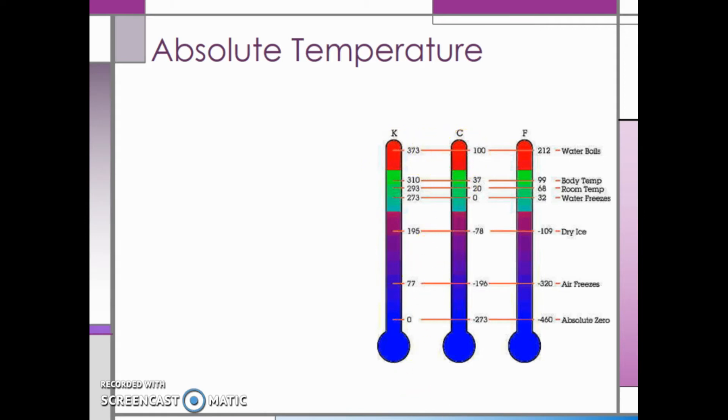In order to convert from degrees Celsius to Kelvin, we will take our temperature in degrees Celsius and add 273. This will give us the temperature in Kelvin. Note that we do not use the degree sign for Kelvin because it is an absolute scale.